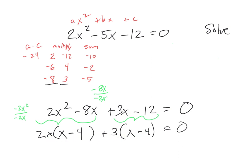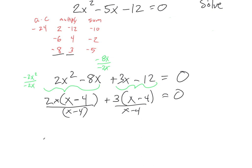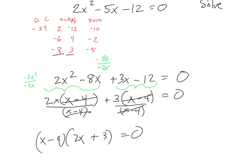Back over here: divide the 3 out of the 3x, left with x. Divide a 3 out of the negative 12, that's negative 4. Now since they both have this same parenthesis set (x minus 4), I'm going to factor that out — divide by x minus 4. So x minus 4 comes out in front; this reduces, leaving me with 2x. These reduce, leaving me with plus 3, equals 0. I'm about 80% of the way there — I've just got to solve.